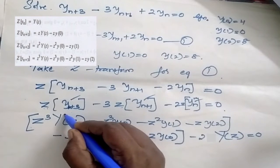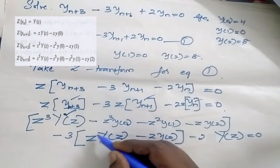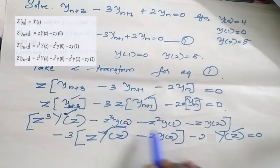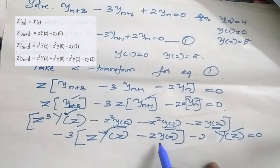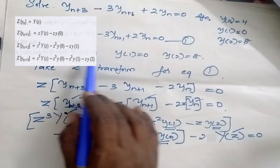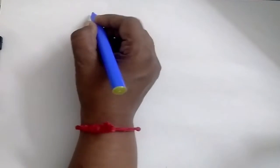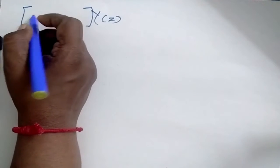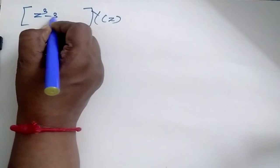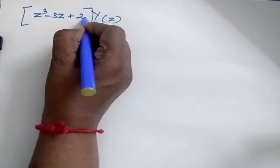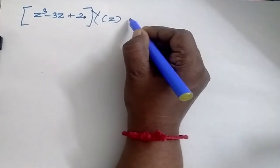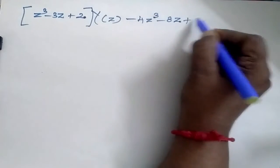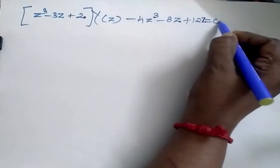Now I am going to combine all Y(z) terms together, then substitute the values for y(0), y(1), and y(2). Taking Y(z) commonly outside, I get z³ minus 3z plus 2. This gives minus 4z³ minus 8z plus z equals 0.